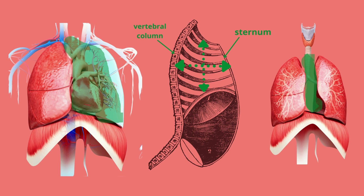The mediastinum extends from the sternum to the vertebral column and from the first rib to the diaphragm. It contains all the structures of the thoracic cavity other than the lungs, like the heart, the trachea, the esophagus, the thymus, and large blood vessels.